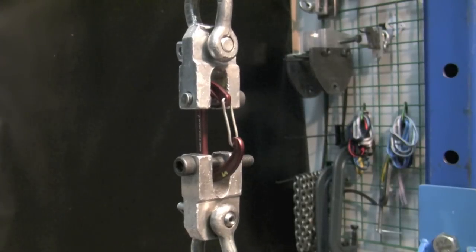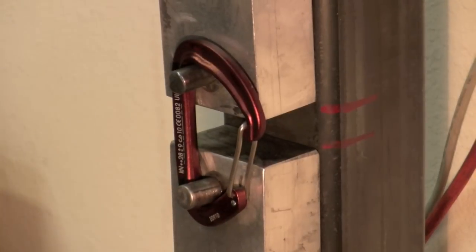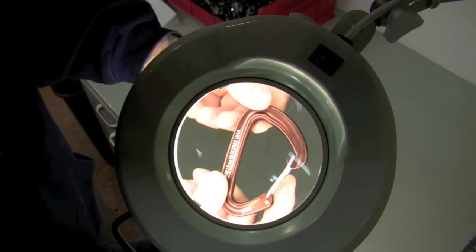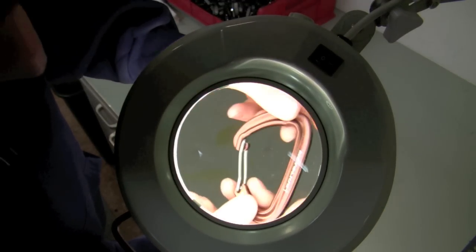Once a production batch passes the initial destructive and non-destructive mechanical testing, 100% of the batch undergoes a visual and minor mechanical inspection.